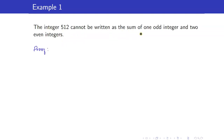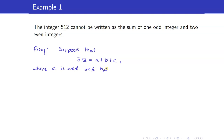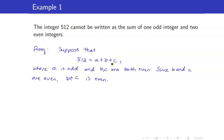For our proof, suppose that we can write 512 as a sum of one odd integer and two even integers. So 512 = A + B + C, where A is odd and B and C are both even. Since B and C are even, B + C must be even. And now we have A is odd and B + C is even. The sum of an odd and even number is odd, so A + B + C must be odd.